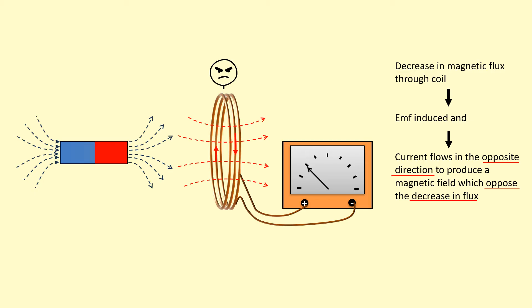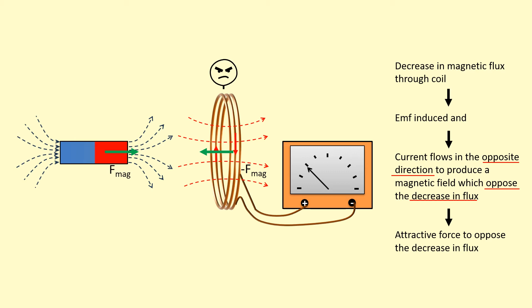The magnetic field produced is now towards the right because it's trying to recreate the magnetic field that is currently decreasing. On top of this, there's going to be a force — this time it's attractive, trying to pull the coil and magnet together to minimize the decrease in flux.